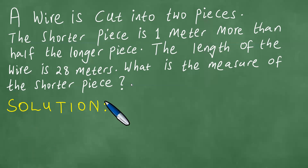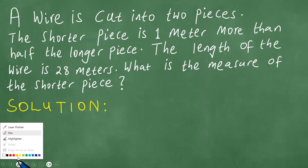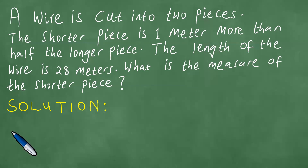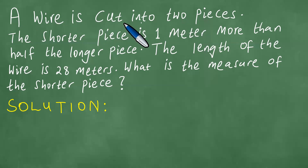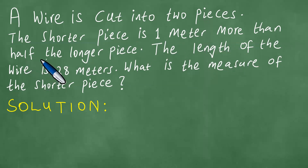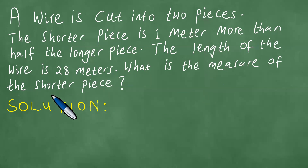We are looking at this question and we want to solve it in detail. We have a wire that is cut into two pieces. The shorter piece is one meter more than half the longer piece. The length of the wire is 28 meters. What is the measure of the shorter piece?